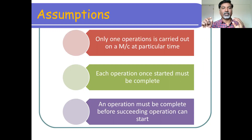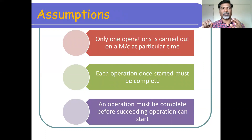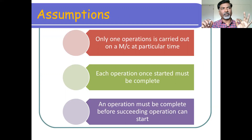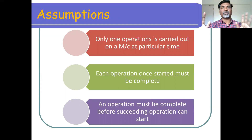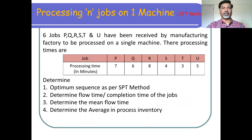The last assumption is that an operation must be complete before the succeeding operation can start. The job assigned to the machine must complete, and once the job is completed, then the second job can be loaded on the machine. These are the assumptions in job sequencing.